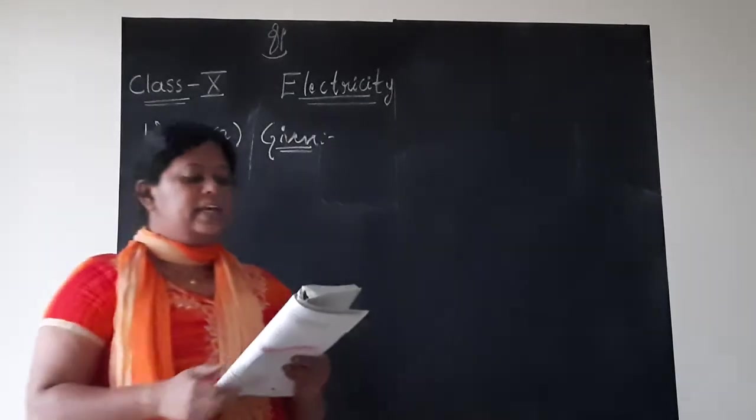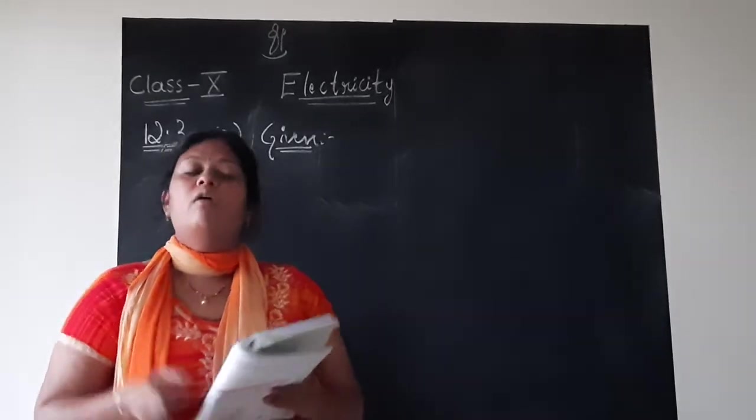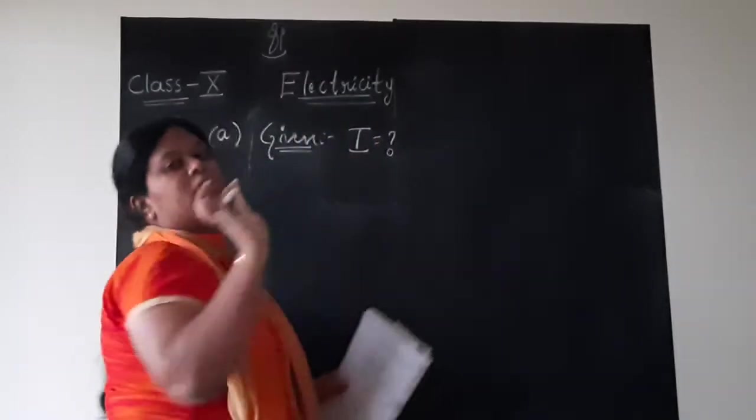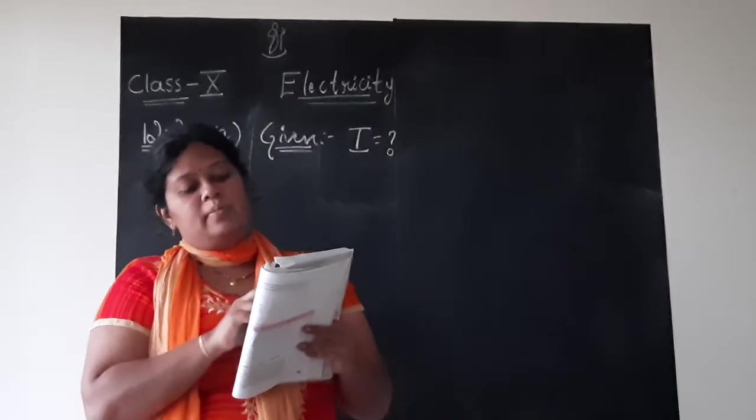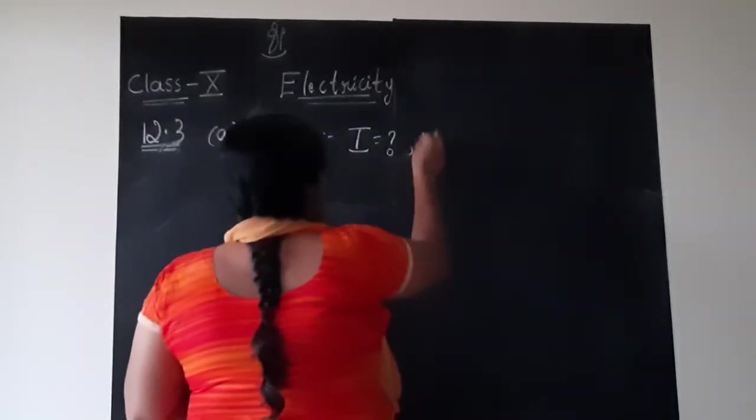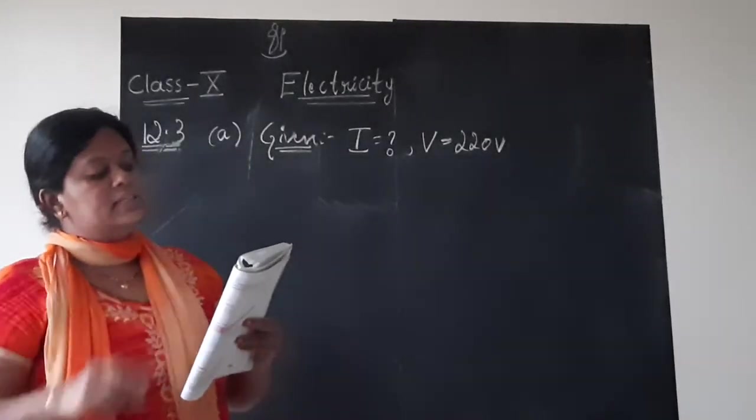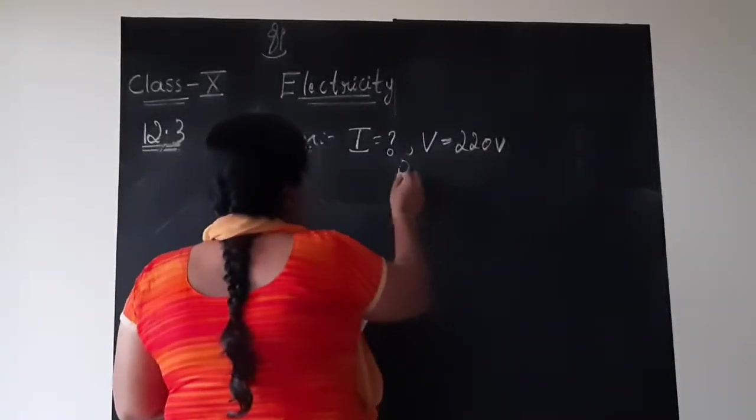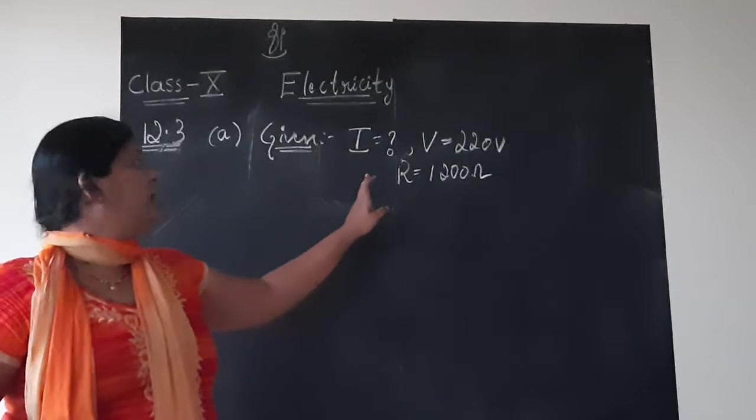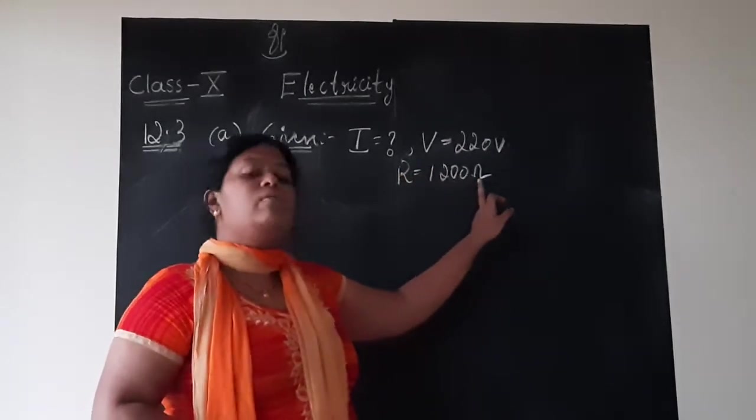Our first step is, let us write the given data. Question is, how much current will an electric bulb draw? If they are asking means we don't know current I. So I is equal to question mark. From a 220 volt source means V equals 220 volt. If the resistance of the filament of the bulb is 1200 Ohms means R equals 1200 Ohms.